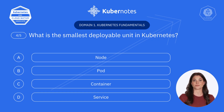Here's question four. What is the smallest deployable unit in Kubernetes? A. Node. B. Pod. C. Container. D. Service.